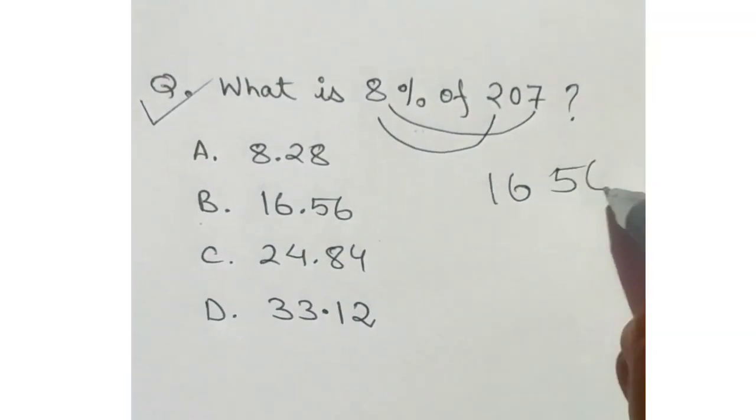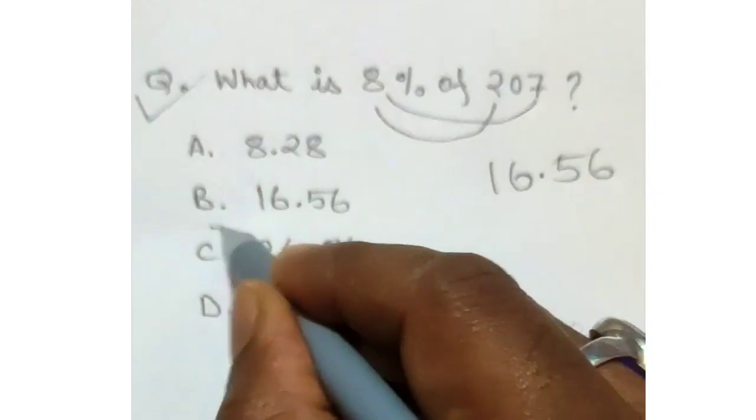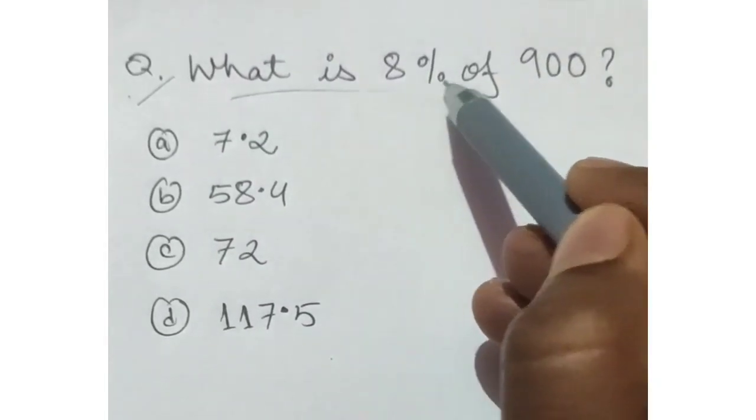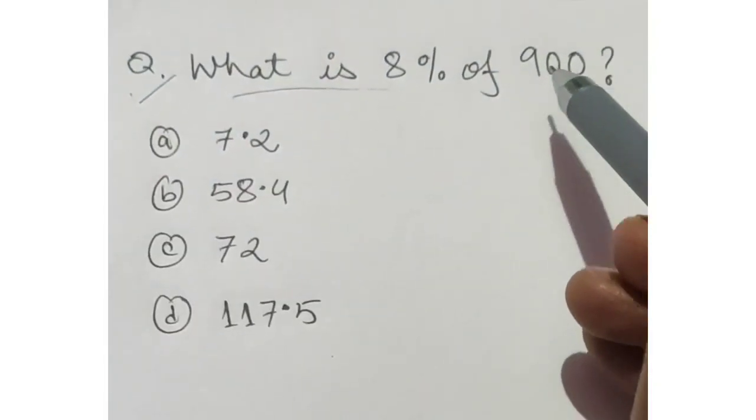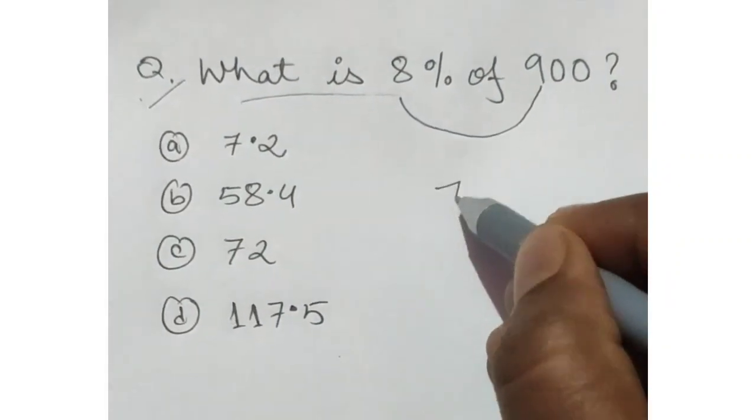8 times 206, 87056. You put one decimal here. This is the answer. What is 8% of 900? 8 times 9072.